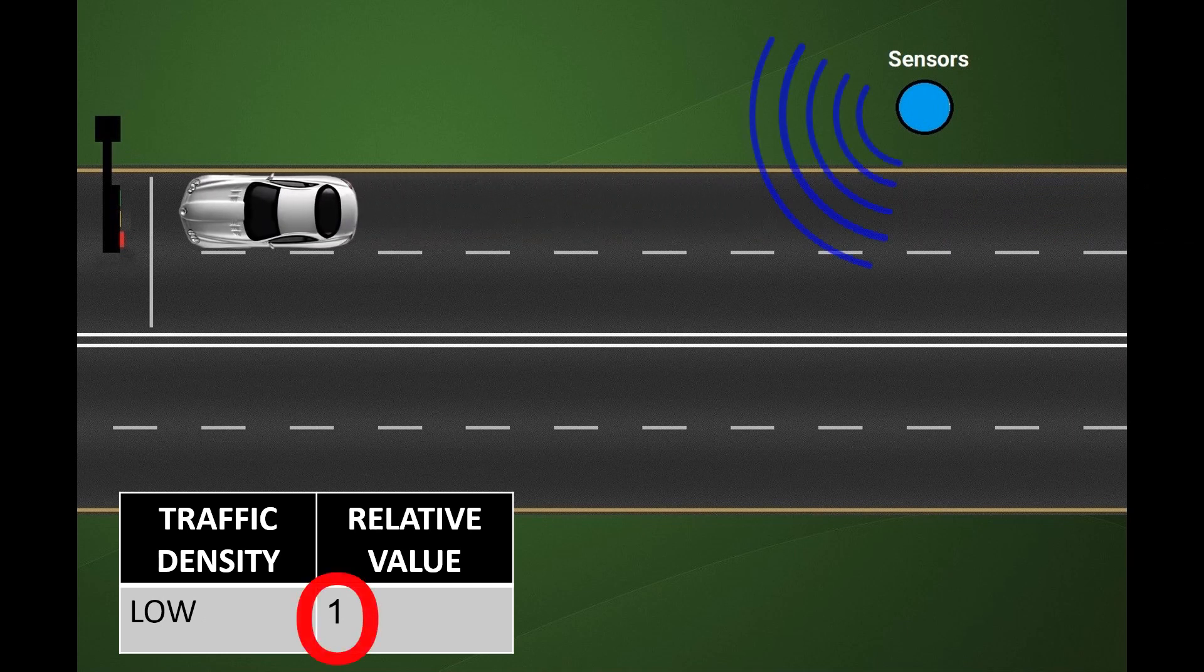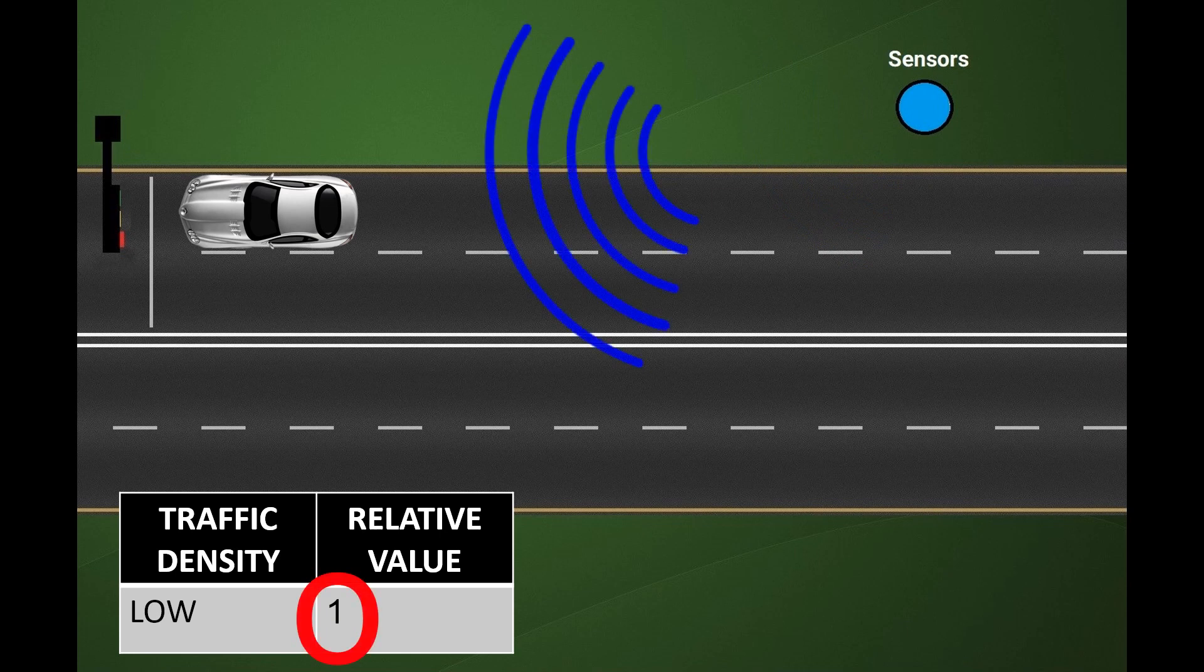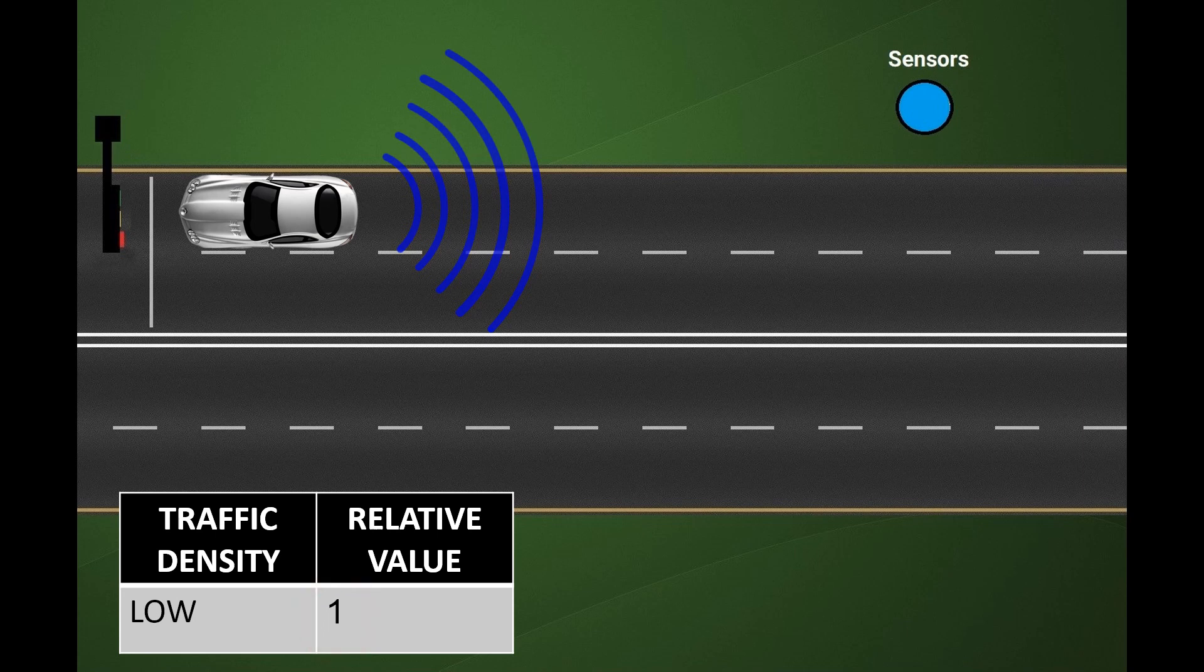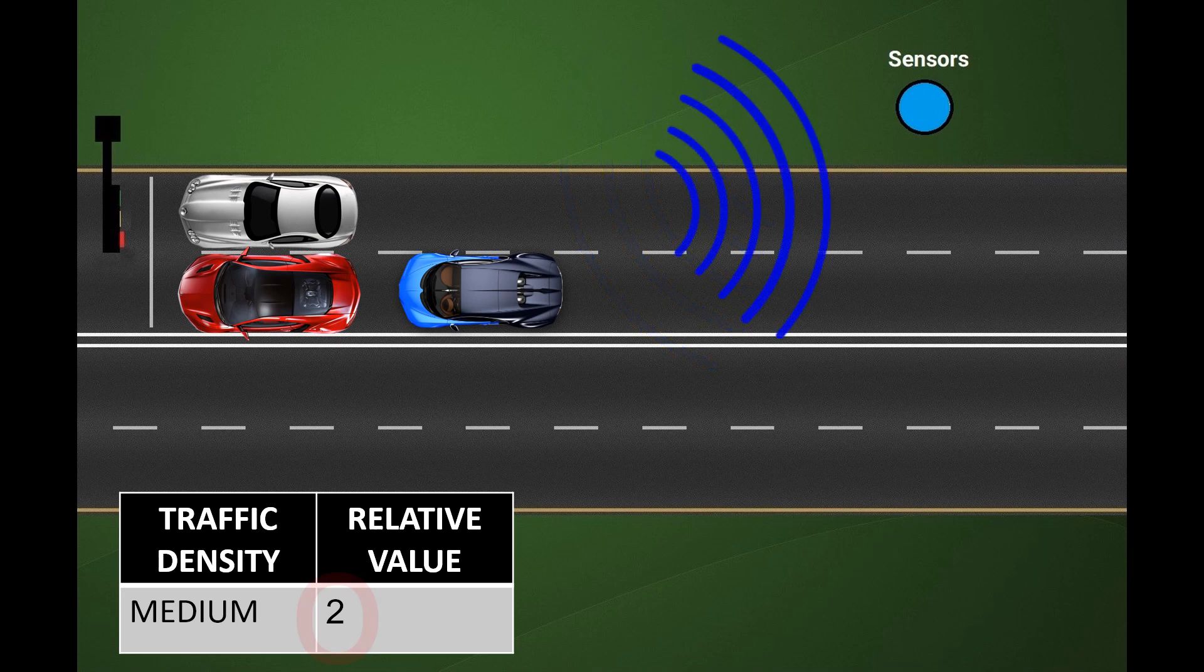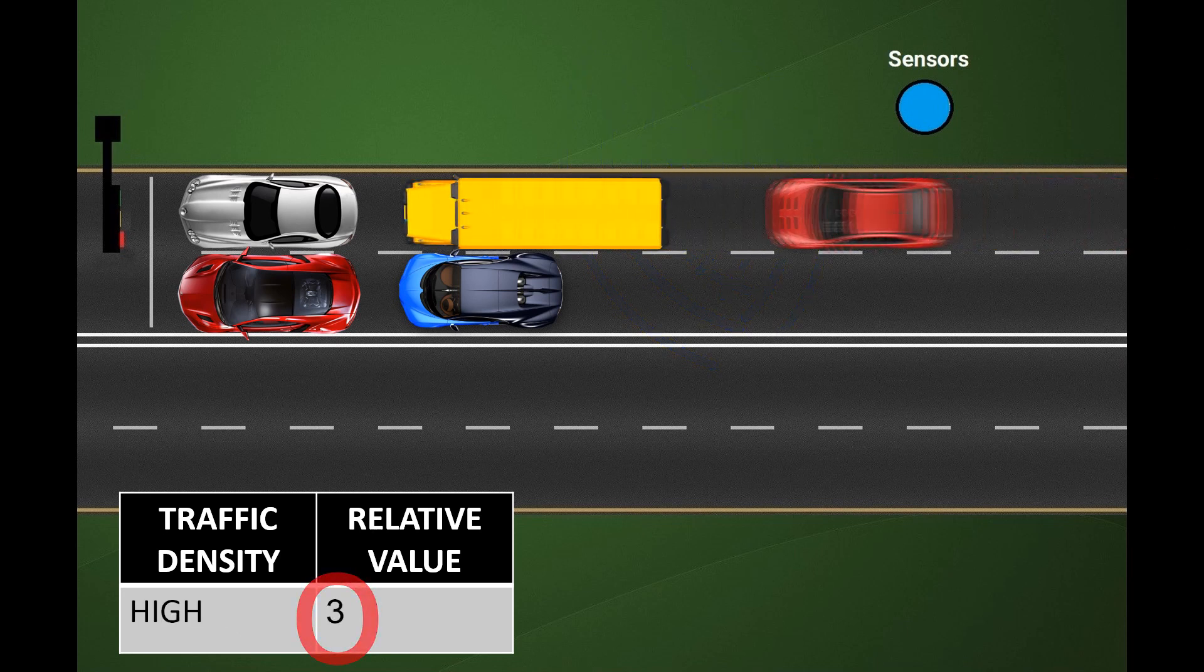When there are minimum vehicles resulting in low traffic on the current path, a relative value of 1 is sent to the gateway. As vehicles increase and sensors detect, the value keeps increasing. In our algorithm, we use 2 for medium traffic and 3 for high traffic.